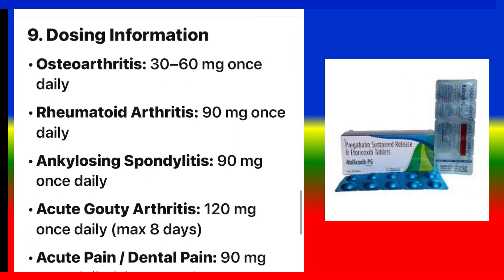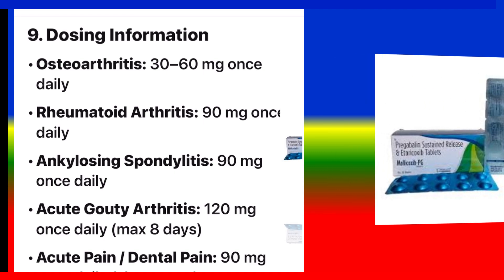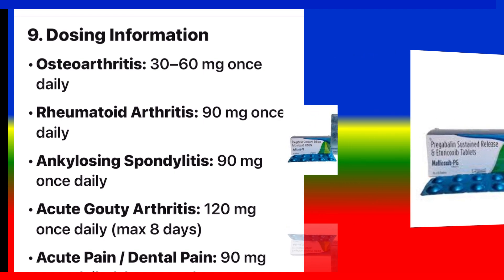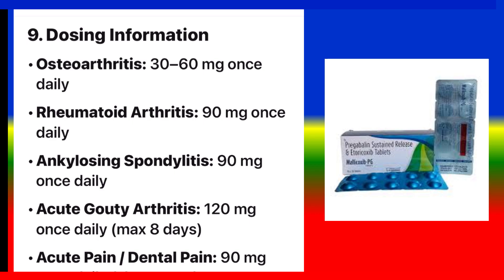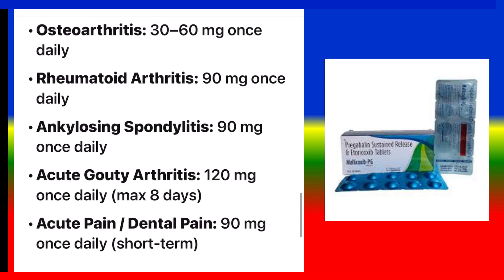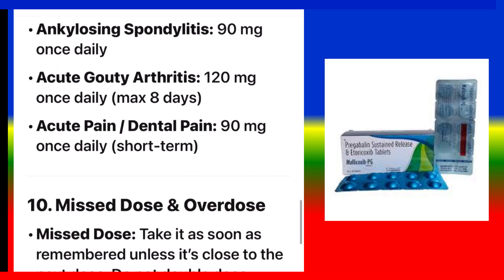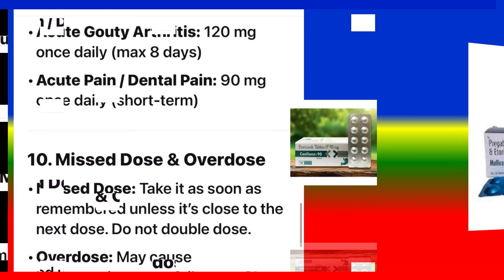Dosing information: Osteoarthritis — 30 to 60 mg once daily. Rheumatoid arthritis — 90 mg once daily. Ankylosing spondylitis — 90 mg once daily. Acute gouty arthritis — 120 mg once daily, maximum 8 days. Acute pain or dental pain — 90 mg once daily, short term.